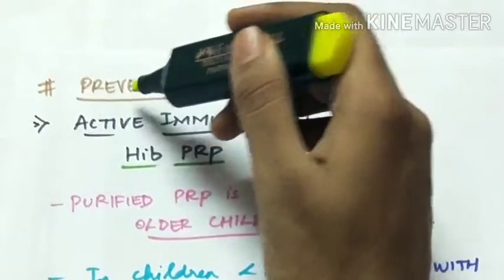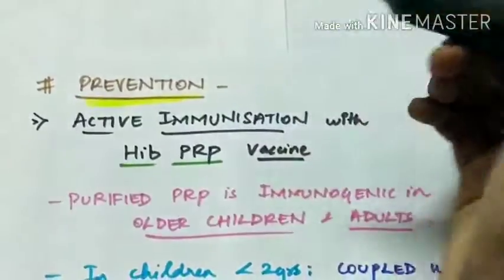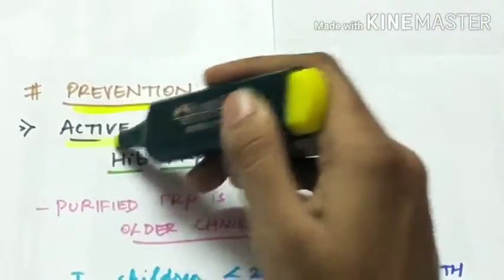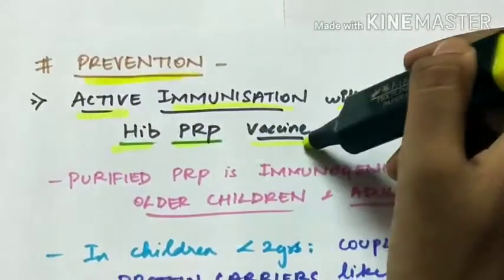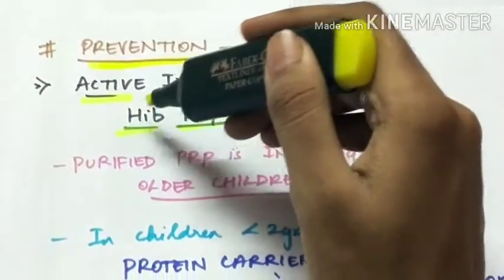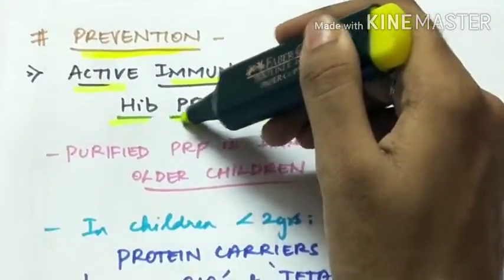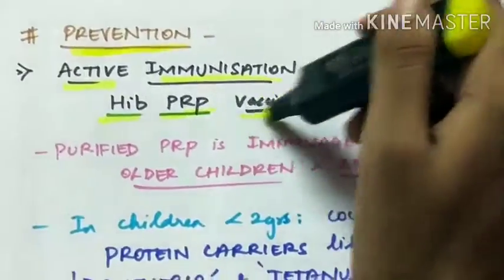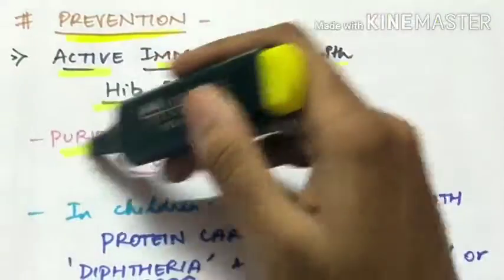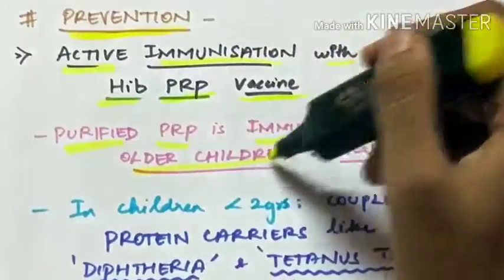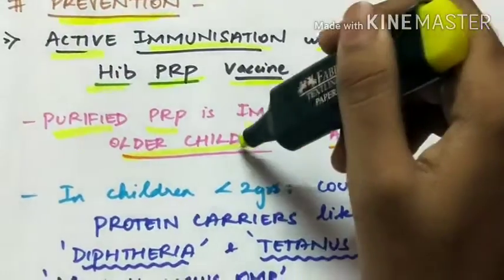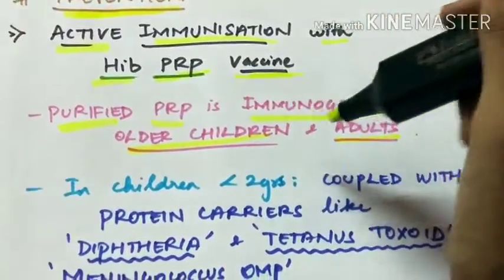Finally, coming to the prevention. Prevention is done by active immunization with HIV PRP vaccine which is Haemophilus influenzae type B polyrebocyl ribitol phosphate vaccine. The purified PRP is immunogenic in older children and adults. Older children more than 2 years of age and adults.